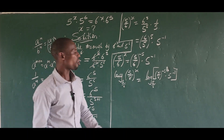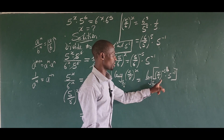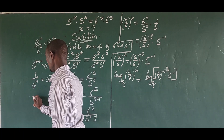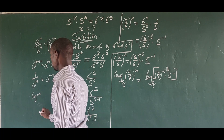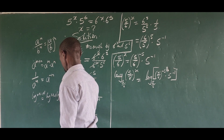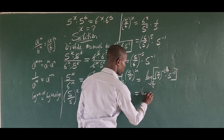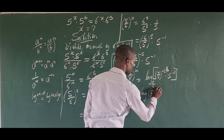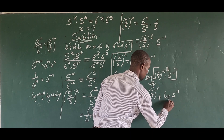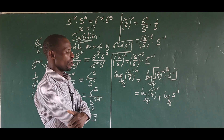We apply the multiplication law of logarithms, which states that log(m · n) = log(m) + log(n). This allows us to open up the right side: log base (5/6) of (5/6)^(−5) plus log base (5/6) of 5^(−1).